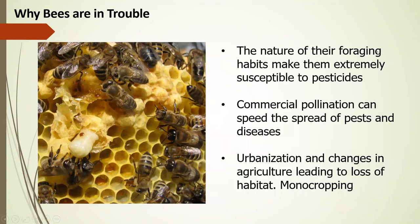A couple of reasons why bees are in trouble: the nature of their foraging habits makes them very susceptible to pesticides. The most important thing I can impart to you is that if you're going to spray any of your plants with anything, just don't do it when they're blooming. During bloom, anything that hits that flower is susceptible to being picked up and spread to honeybee colonies. Commercial pollination can also spread diseases and pests, particularly varroa mites, European foulbrood, American foulbrood — really dangerous things for honeybees.